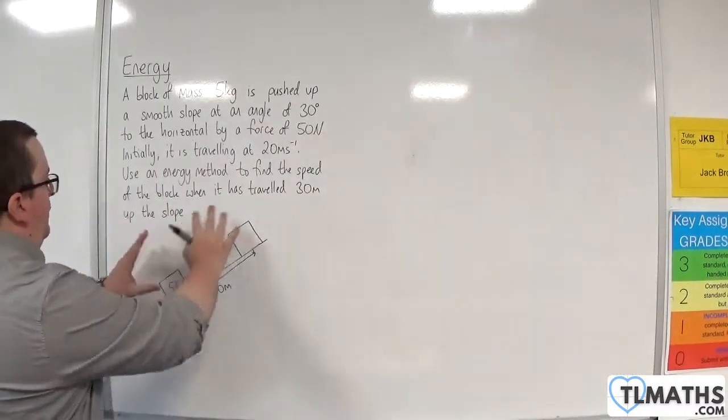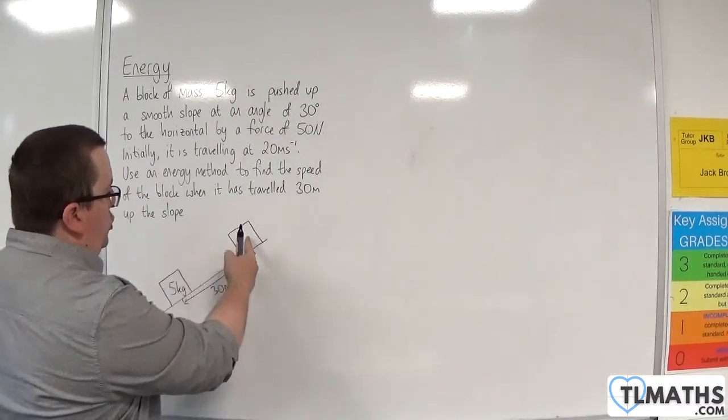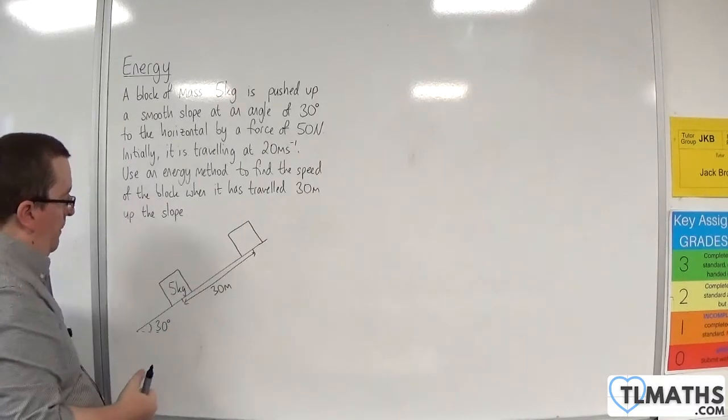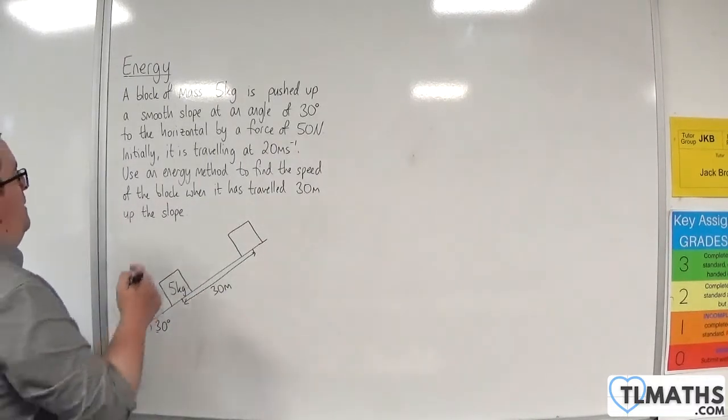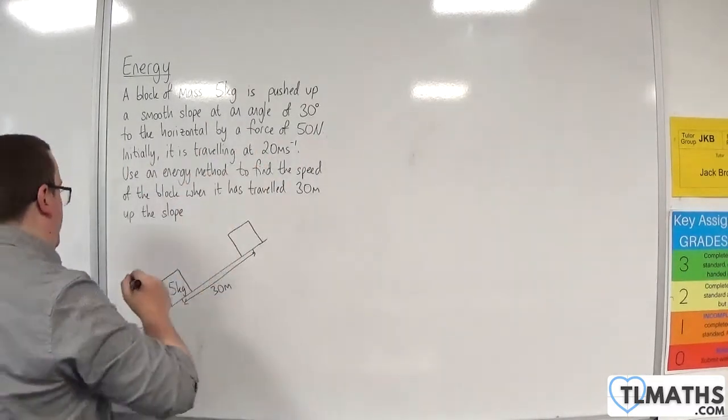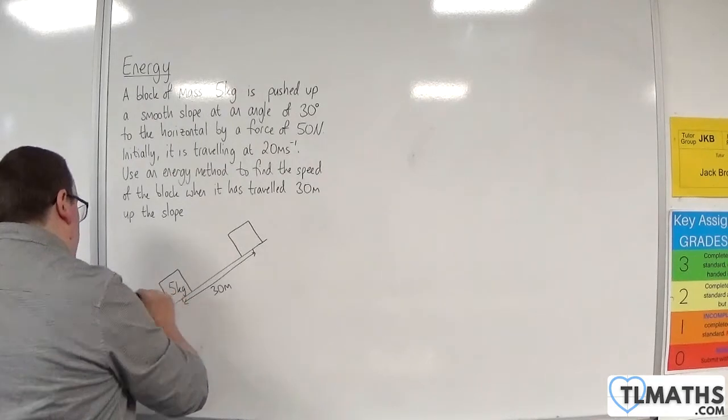I'm going to add to this diagram here. We've got our block of 5 kilos, its final position is here, 30 meters further up the slope, and the angle is 30 degrees. It's being pushed by this force of 50 newtons.